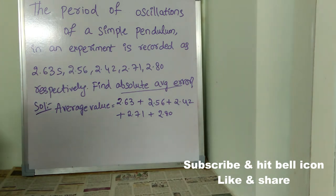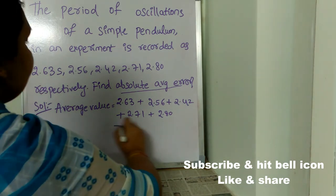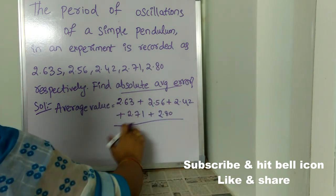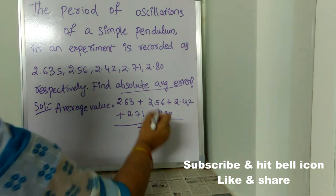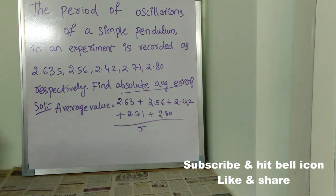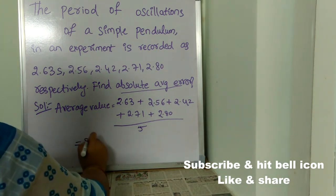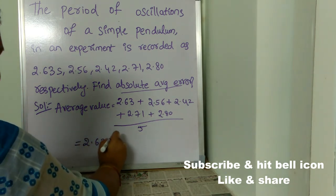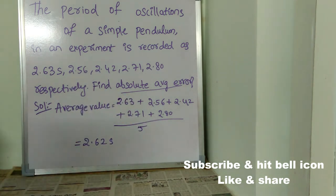And coming to the denominator, number of values. How many number of values are there? Five. So, we can directly write five. So, when you simplify this, we will be getting 2.62 seconds as average value.